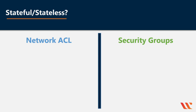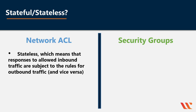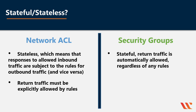Another concept to be familiar with is whether the virtual firewall is stateful or stateless. A network ACL is stateless, which means that responses to allowed inbound traffic are subject to the rules for outbound traffic, and vice versa — so return traffic must be explicitly allowed by the rules. With security groups, they are stateful, which means return traffic is automatically allowed, regardless of any rules.